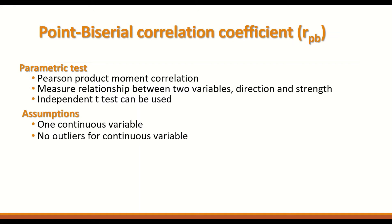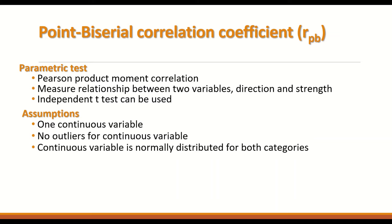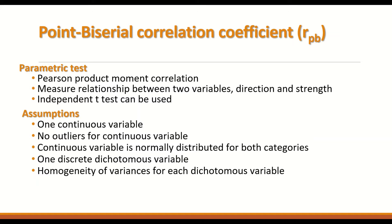For data to be used with Point Biserial Correlation Coefficient, certain assumptions must be fulfilled. There should be one continuous variable with no outliers, meaning it should be normally distributed for both categories when split. There should be one discrete dichotomous variable. There must also be homogeneity of variance for each dichotomous group, and there should be no outliers in the data.